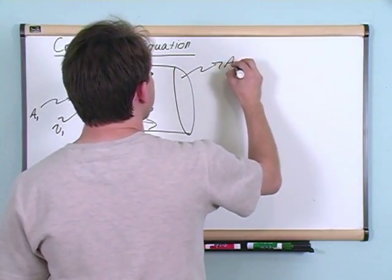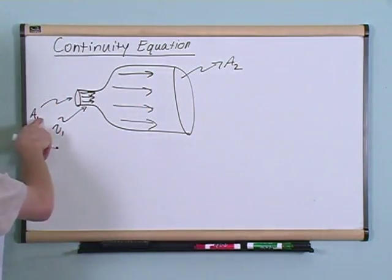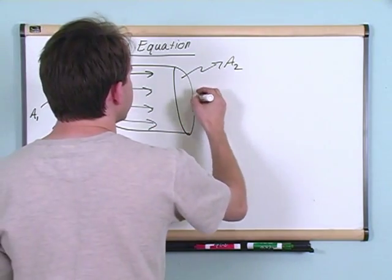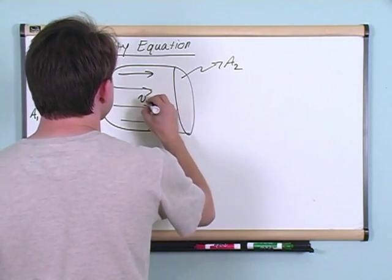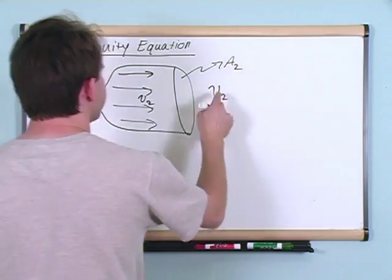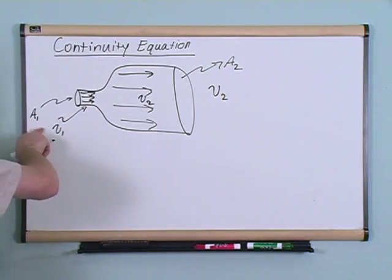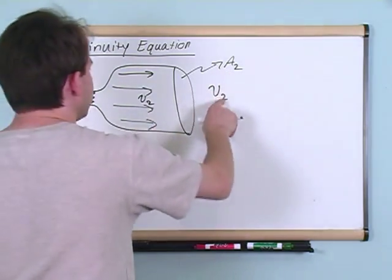And on the exit side, you're going to have A2, which is bigger than A1 obviously. And you're going to have V2. So you have A1 and V1 going in and you have A2 and V2 going out.